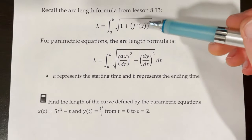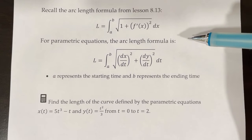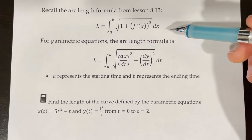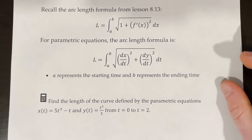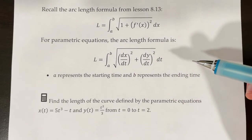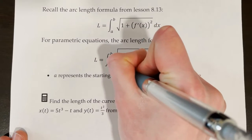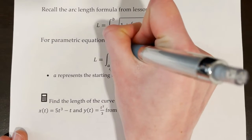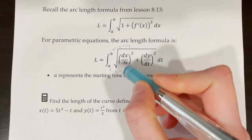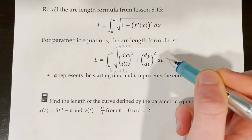Here, a is your starting x value and b is your ending x value. For parametric equations, the arc length formula is very similar, and it actually comes from that formula — though we don't have time to go over the derivation. For parametric equations, L equals the integral from a to b — where a and b represent different times, t₁ and t₂ — of the square root of (dx/dt)² plus (dy/dt)², all with a dt on the end.